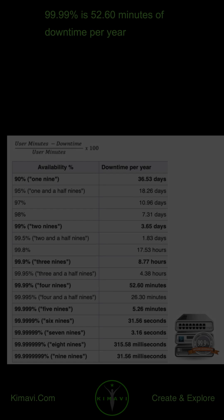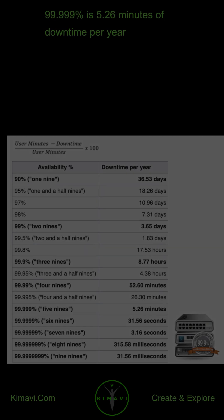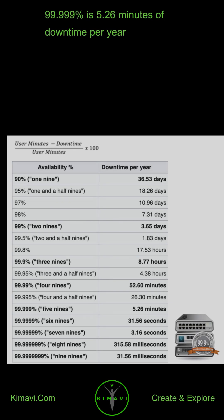99.99% availability means 52.60 minutes of downtime per year. 99.999% availability means just 5.26 minutes of downtime per year.